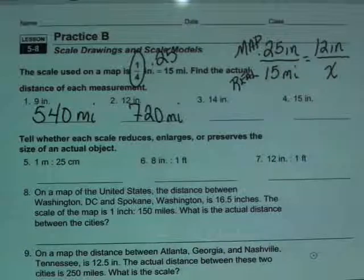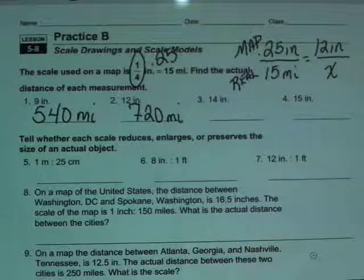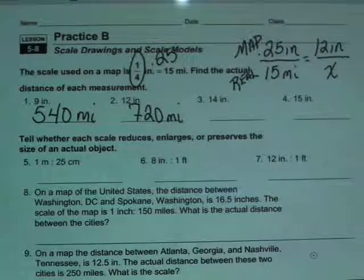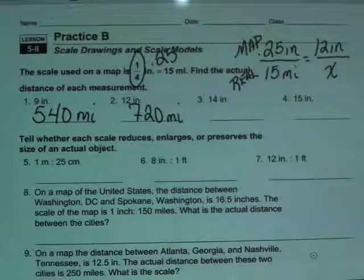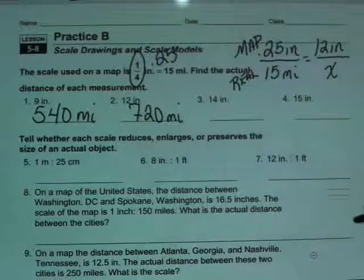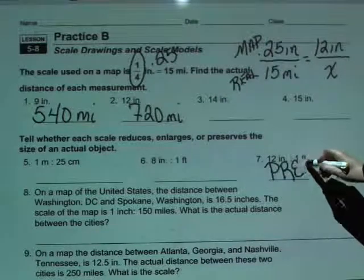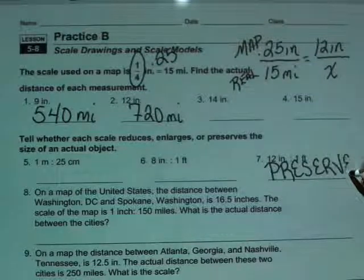So in order to do that, what you're really trying to figure out is what does the measurement go to. Does the measurement go to something that works out to be smaller? Does the measurement go out to be something that's bigger? Or does the measurement work out to be something that's the same? For instance, number 7 you're looking at and you already know the answer because it says 12 inches is a foot. Well, 12 inches is exactly the same as one foot. So it's not going to change anything even though it's a different unit. That one is going to preserve the measurement because they are exactly the same.